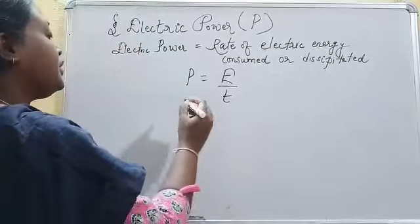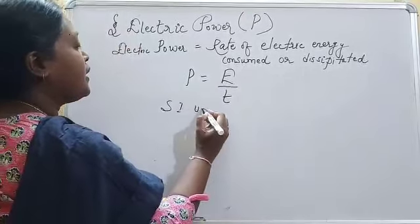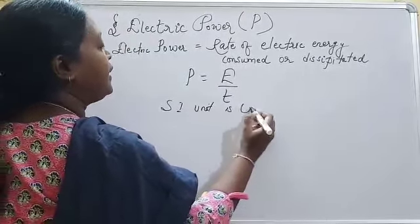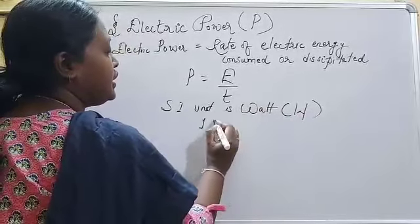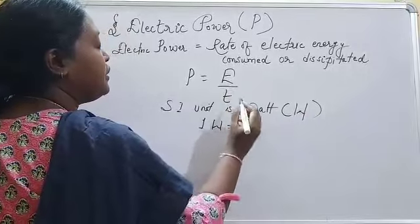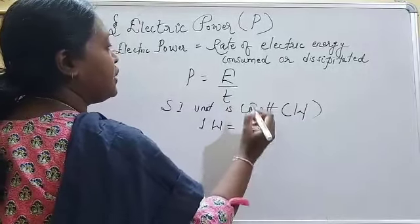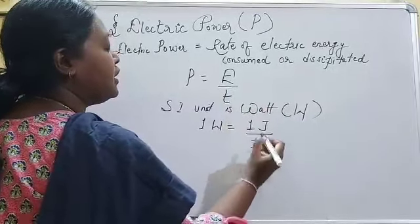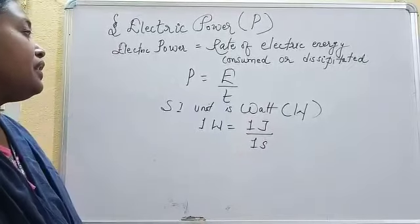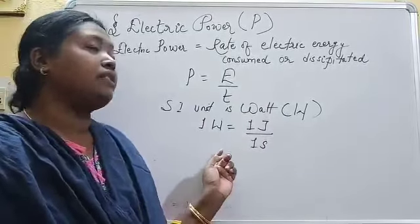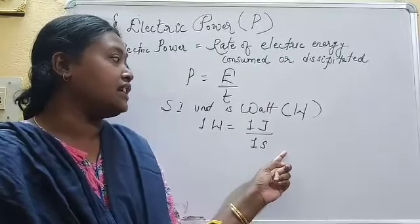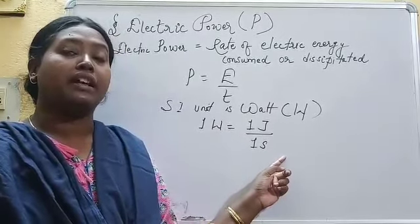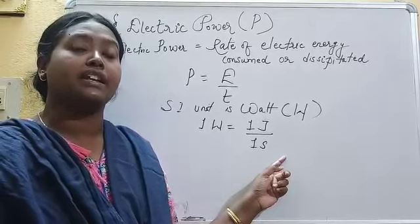The SI unit of power is watt. It is denoted by the symbol W. 1 watt equals 1 joule upon 1 second. Then how will you define power? Electric power is said to be 1 watt if 1 joule of energy is consumed or dissipated by the electrical device in 1 second.